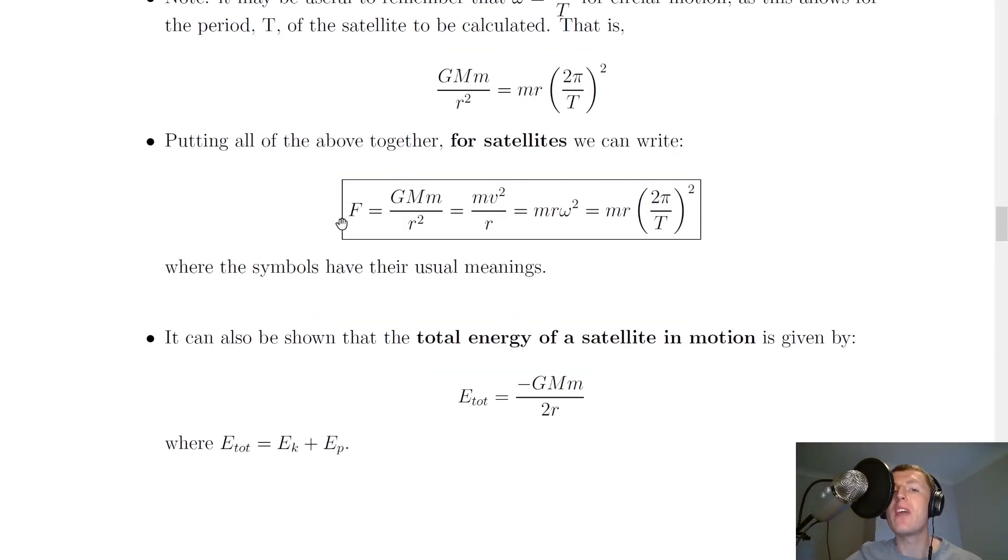It's worth pointing out that you don't get this whole thing on the relationship sheet in the exam, but you do get the individual parts. You get F = GMm/r² and F = mv²/r = mrω² for centripetal force. The new term there is not on the relationship sheet.